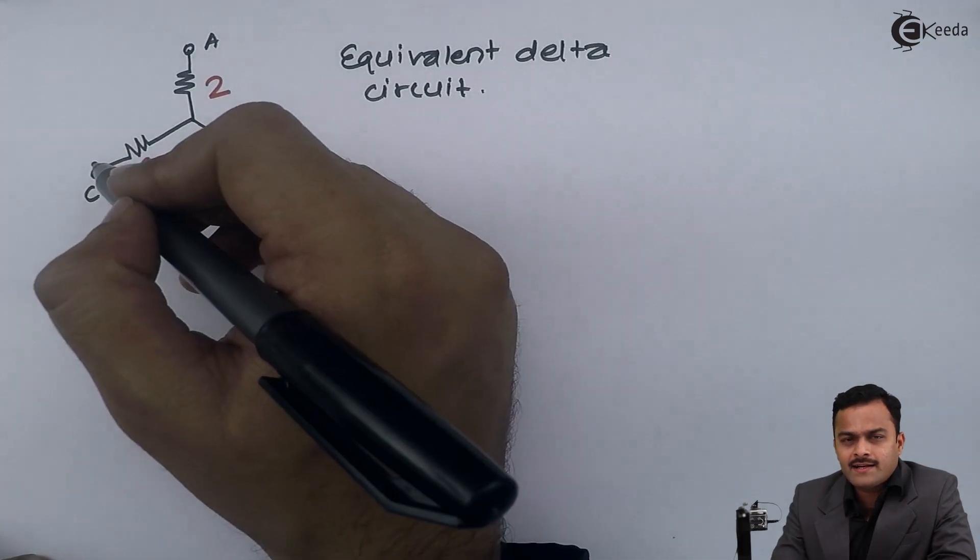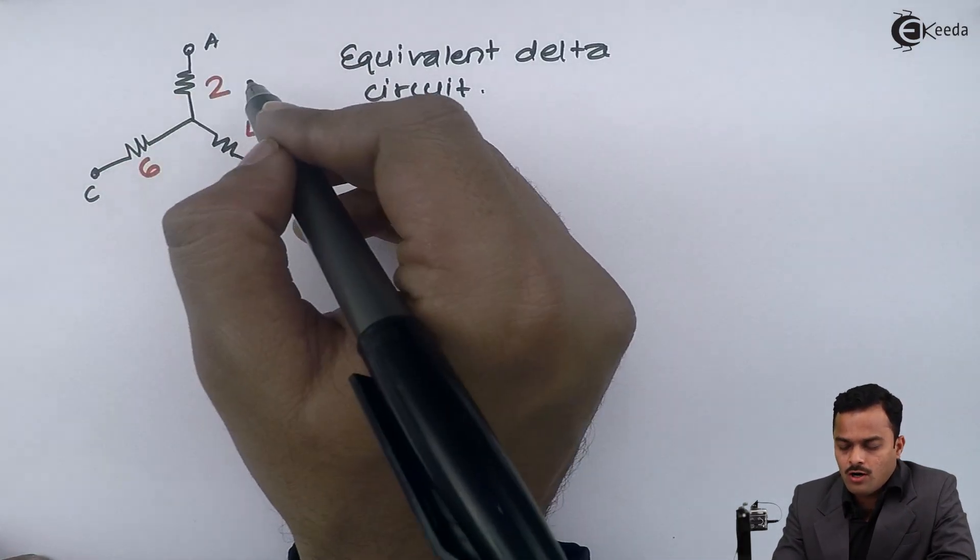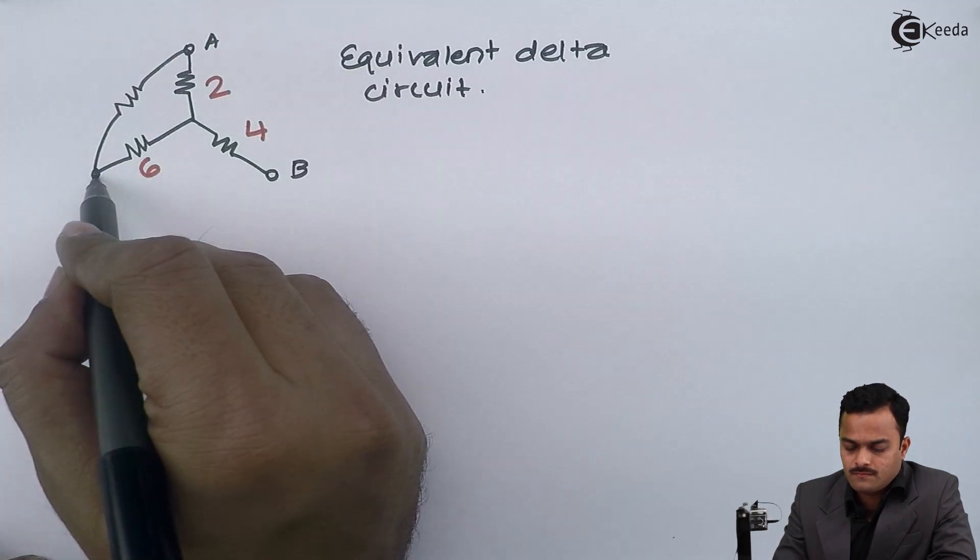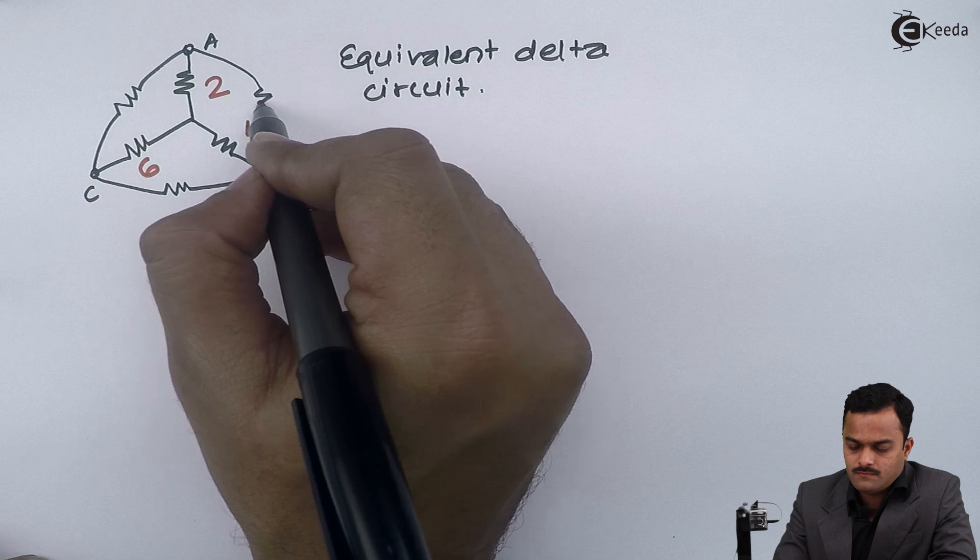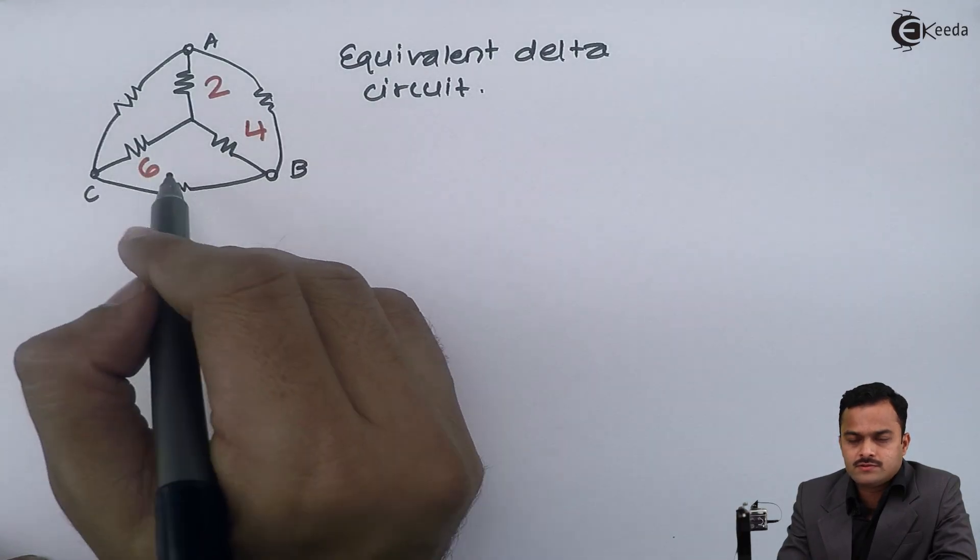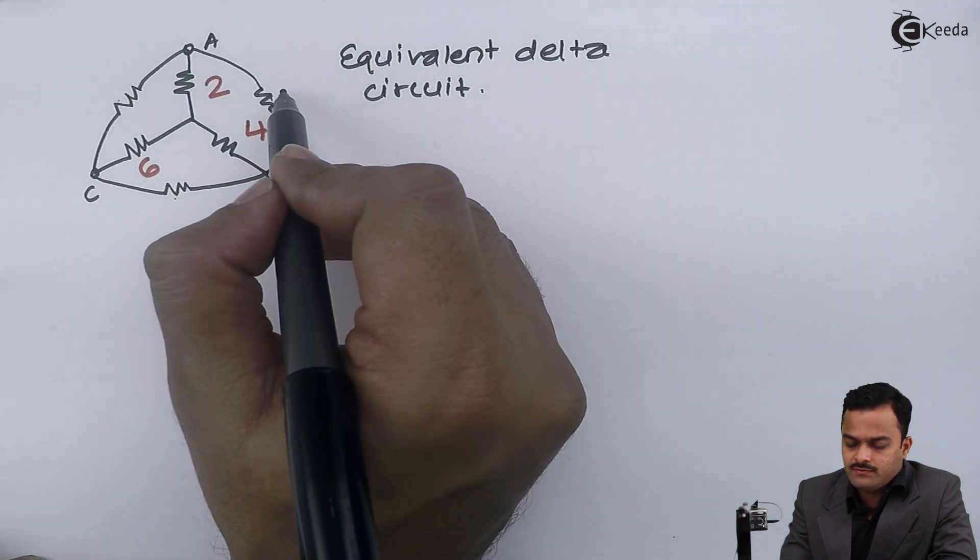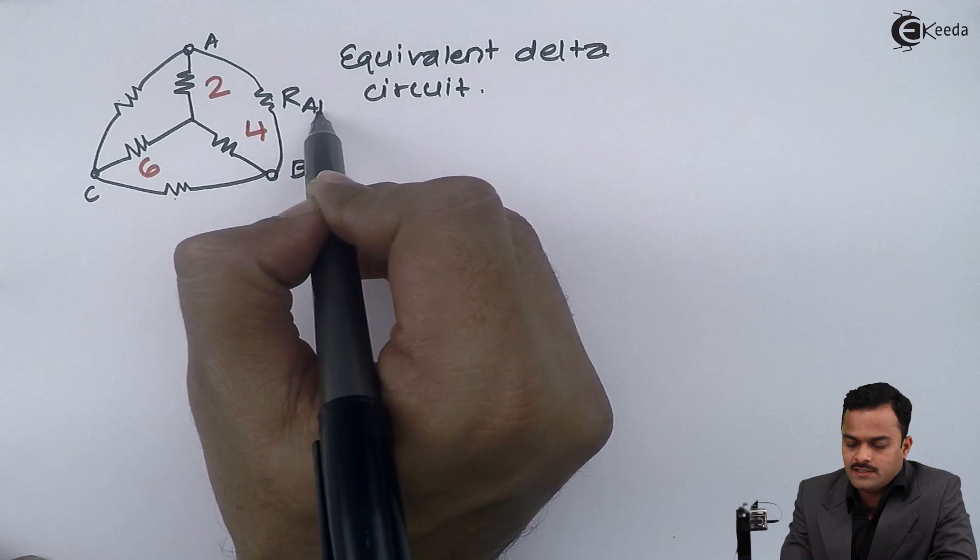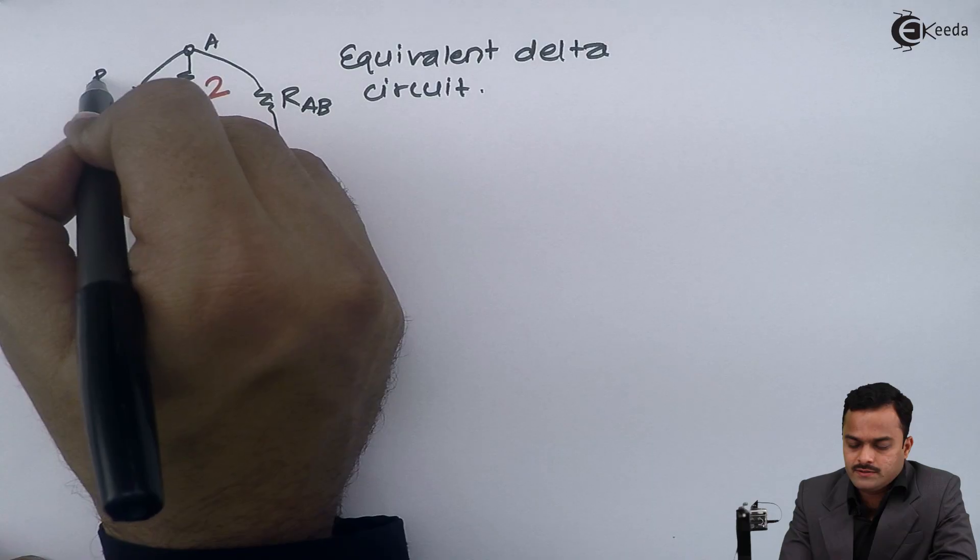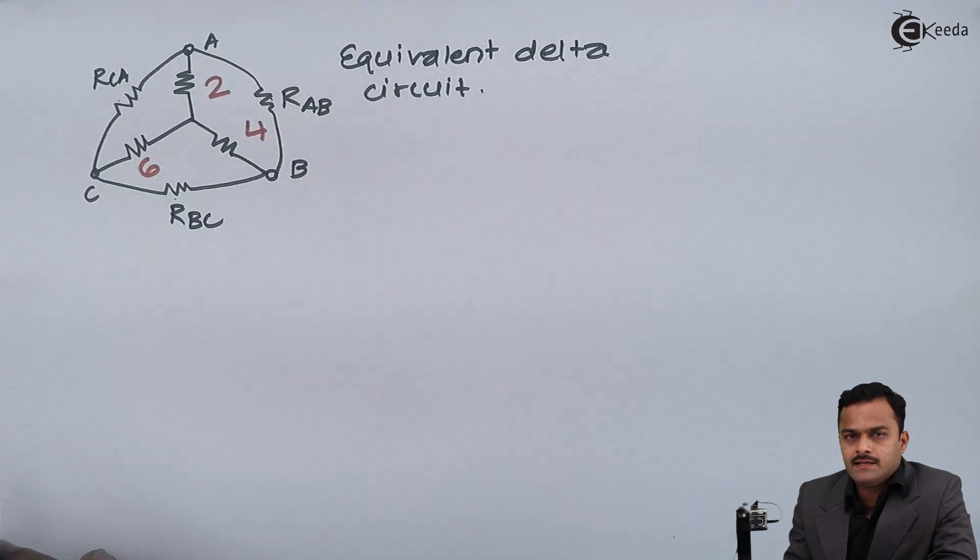As we have discussed that delta will get formed by closing all the open ends through resistors. This particular delta circuit you will get and now our job is to get these values. For this where it is connected between a and b, for this it is between b and c and for this it is c and a.